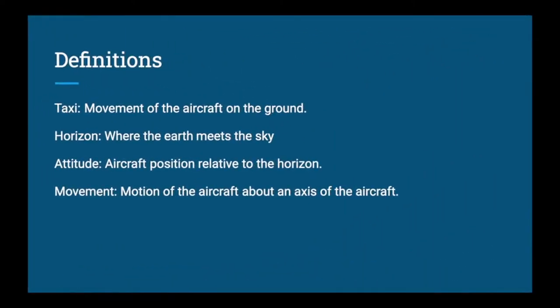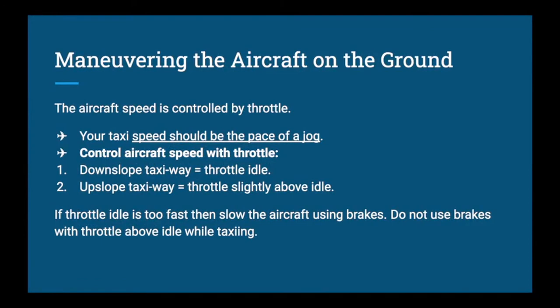A couple of definitions: taxiing is essentially driving the airplane on the ground — anytime we're on the ground, it's called taxiing. The horizon is where the earth meets the sky; you'll see a nice defined line on a clear day. The attitude is the aircraft's position relative to that horizon — it may be on the horizon, above it, or below it. The movement is the motion of the aircraft about an axis; for example, if the nose is below the horizon and we want to get it above, we have to move the airplane — that is a movement.